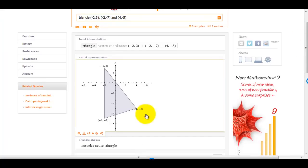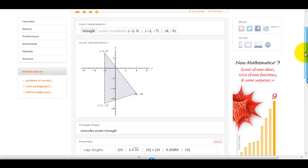And at the bottom, it tells me what kind of shape it is. It tells me it's isosceles. And it tells me that the edge lengths are 10, 2 root 10, and 10.